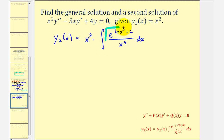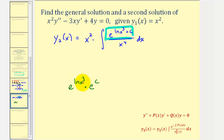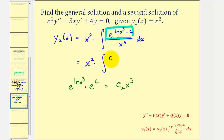Let's focus on this piece. e raised to the power of natural log x cubed plus c equals e raised to the power of natural log x cubed times e to the power of c. Since e to the power of c is a constant and e raised to the power of natural log x cubed equals x cubed, this simplifies to c sub two times x cubed. So now we have x squared times the integral of c sub two times x cubed divided by x to the fourth, dx.